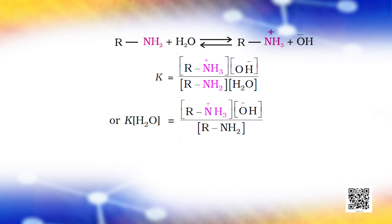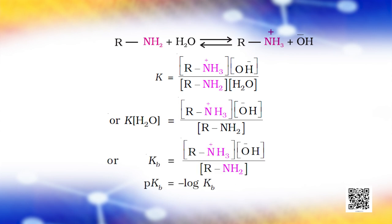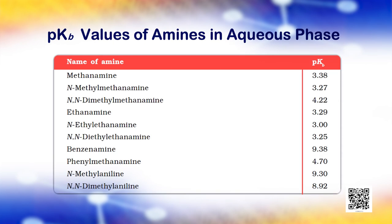Amines have an unshared pair of electrons on the nitrogen atom, due to which they behave as Lewis bases. The basic character of amines can be better understood in terms of their Kb and pKb values. Larger the value of Kb, or smaller the value of pKb, stronger is the base. The pKb values of a few amines are shown on the screen.